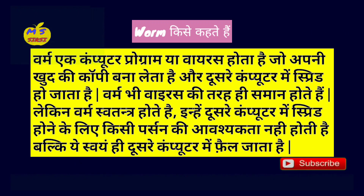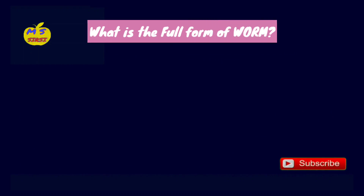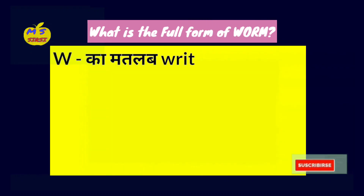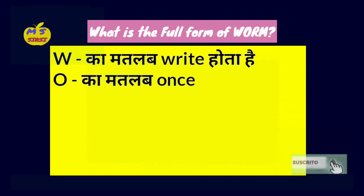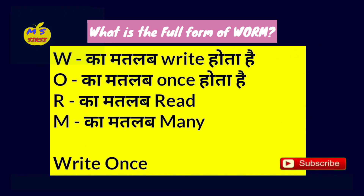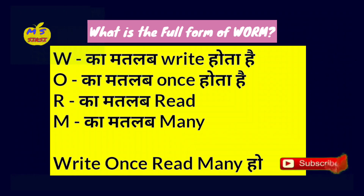तो Friends, अब हम लोग Worm का full form जान लेते हैं. What is the full form of WORM? W का मतलब Write होता है, O का मतलब Once होता है, R का मतलब Read, और M का मतलब Many. इन सभी को मिला कर Write Once Read Many होता है.